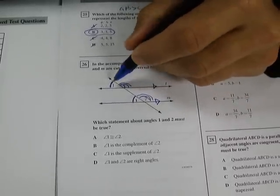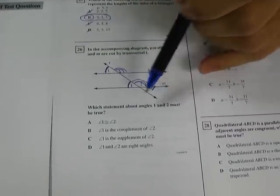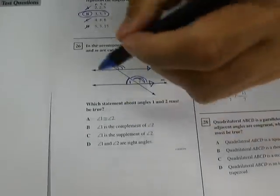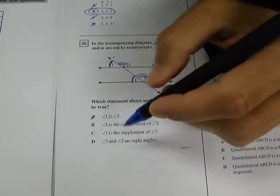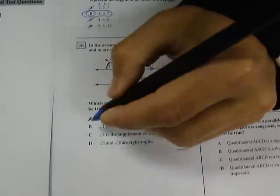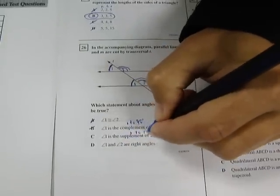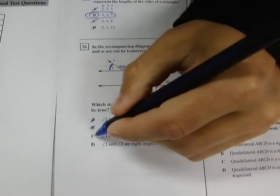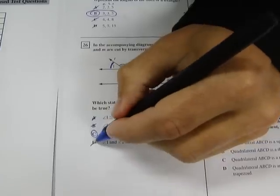angle 1 is supplementary to angle 2. And of course, angle 2 is supplementary to angle 1. So which statement about angles 1 and 2 must be true? That they're congruent? No, they're not congruent. Or they're probably not congruent. That they're complements. Complements means they add to 90 degrees. So that's also not true. Supplement, that means they add to 180. That is the key word. That's what we're looking for. Supplementary. And if they're right angles, they're probably not right angles. So that's not your answer. So it's definitely C.